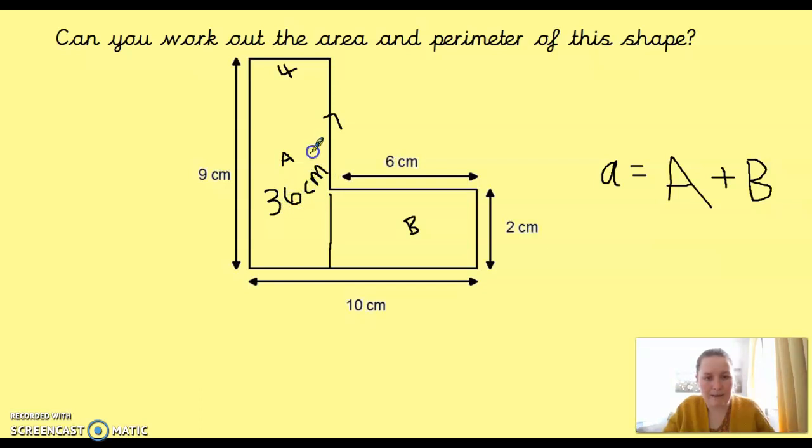Then for B, again, I'm not going to take this measurement because this measurement, this part is not part of the shape. This is the shape I want, so I'm going to be doing 6 by 2, 12 centimetres squared. And then I need to add that up and I will have found the area of the compound shape. So, 36 add 12, we've got 48 centimetres squared.